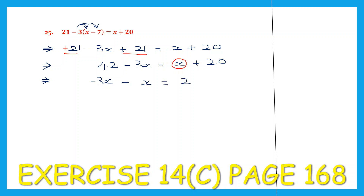On the right hand side we already have 20. We're going to transpose 42 from the left to the right. It's going to become minus 42. So here we have minus 3x minus 1x. Let's work on the numbers. Signs are the same, so we put the same sign. Now 3 plus 1 is 4.